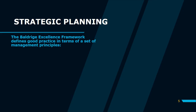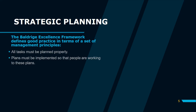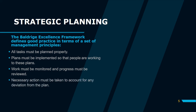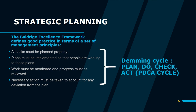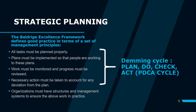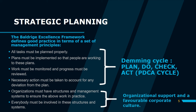We also have the Baldrige Excellence Framework, which defines good practices in terms of a set of management principles. Number one: all tasks must be planned properly. Number two: plans must be implemented so that people are working to these plans. Number three: work must be monitored and progress must be reviewed. Number four: necessary action must be taken to account for any deviation from the plan. These first four principles correspond to the Deming Cycle — plan, do, check, and act. The fifth principle is that organizations must have structures and management systems to ensure the above work in practice, and lastly, everybody must be involved in these structures and systems. The other two cover necessary provisions of organizational support in a favorable corporate culture.